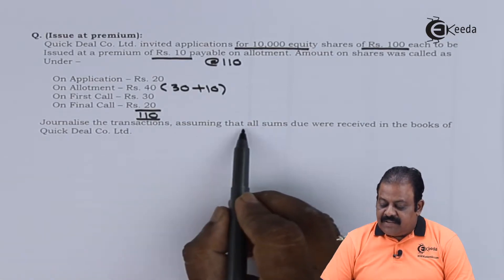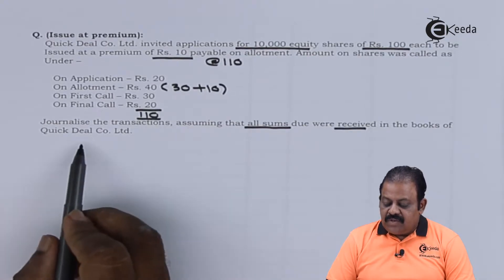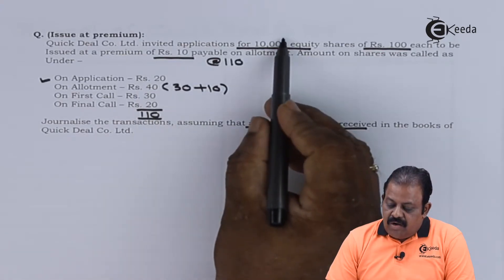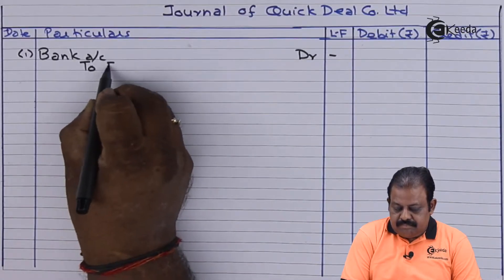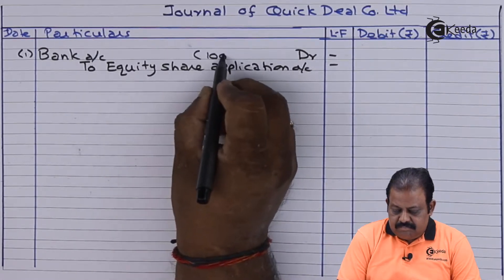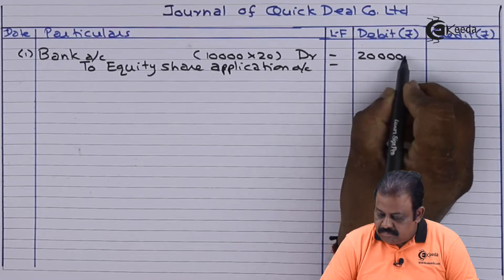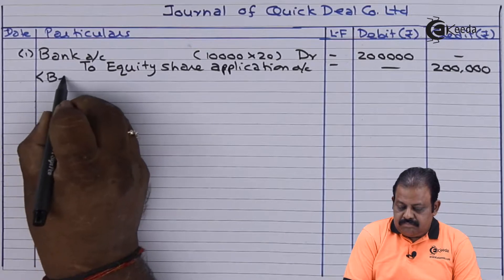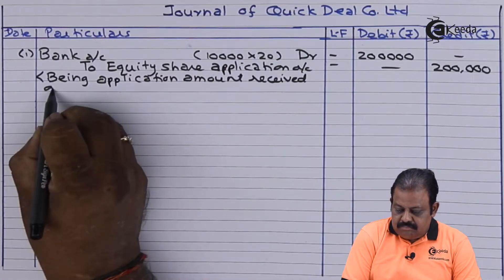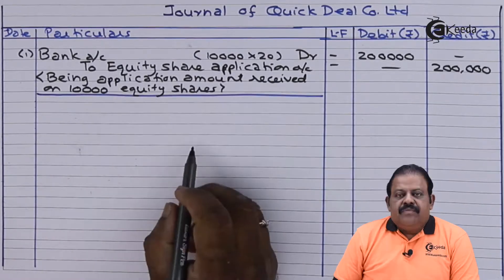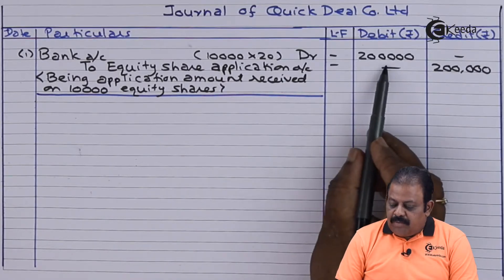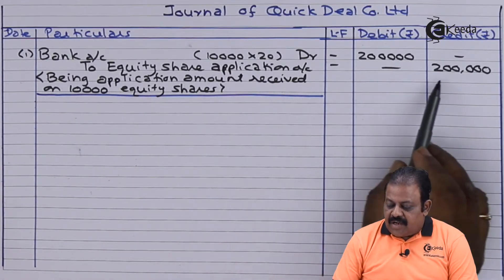Journalise the transactions assuming all sums due are received, in the books of Quick Deal Company Limited. The first entry is for receiving the application amount of rupees 20 per share on 10,000 equity shares. Bank account debit — on 10,000 shares at rupees 20 each, amount received is rupees 2 lakhs — to equity share application account rupees 2 lakhs.